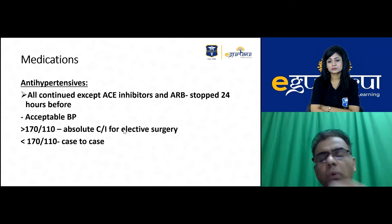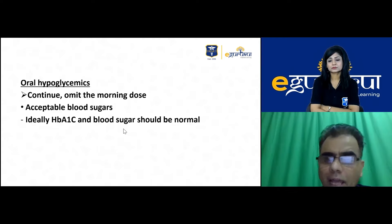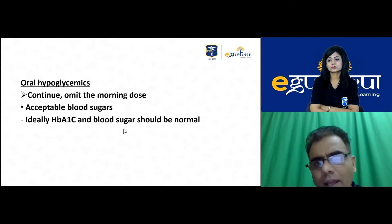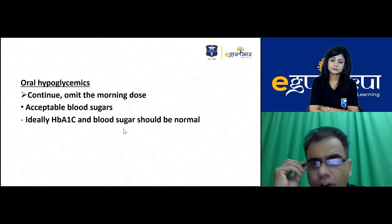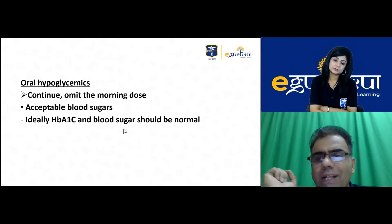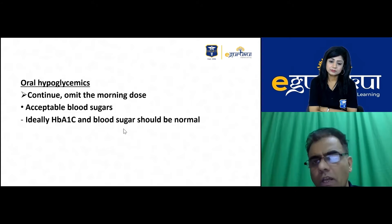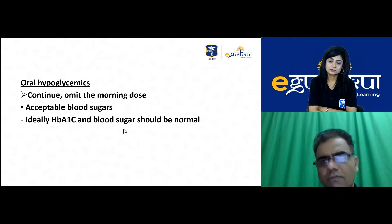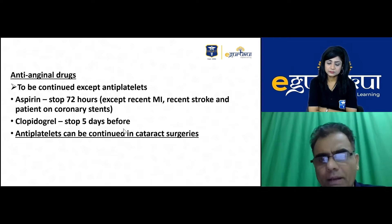Oral hypoglycemics are continued but the morning dose on the day of surgery is omitted. Ideally, both blood sugar and HbA1c should be in normal range; however, HbA1c normalization can take up to three months. If surgery is necessary and cannot be deferred, at minimum blood sugar should be controlled for elective surgeries. All anti-anginal drugs are continued.